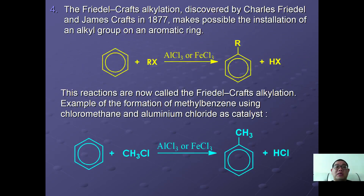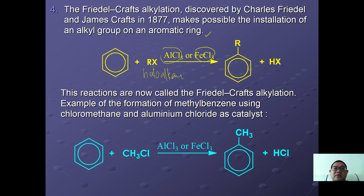The next reaction is Friedel-Crafts alkylation, discovered by Charles Friedel and James Crafts in 1877, which makes possible the installation of an alkyl group onto an aromatic ring. The general equation involves a haloalkane (RX) catalyzed by AlCl3 or FeCl3, sometimes under reflux, to form an alkylbenzene with HX as a side product.